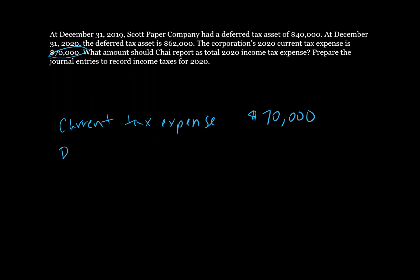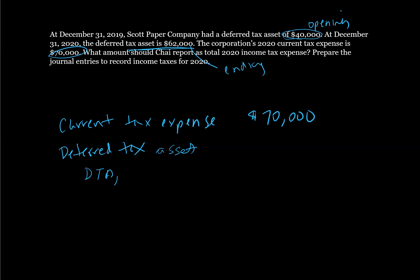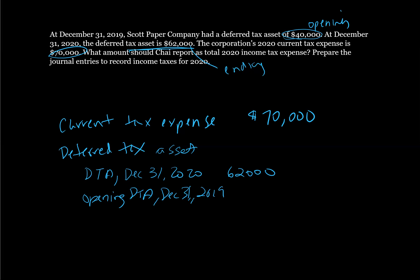Then we've got deferred tax. It says that we have a deferred tax asset. The company had, at December 31, 2019, an opening of $40,000. And this is our ending — December 31, 2020, the year after. So deferred tax at December 31, 2020 — we want this to be $62,000, and our opening deferred tax asset on December 31, 2019 was $40,000.